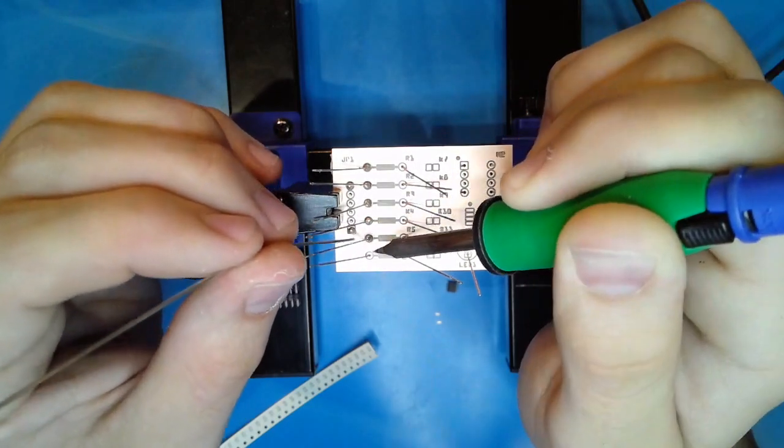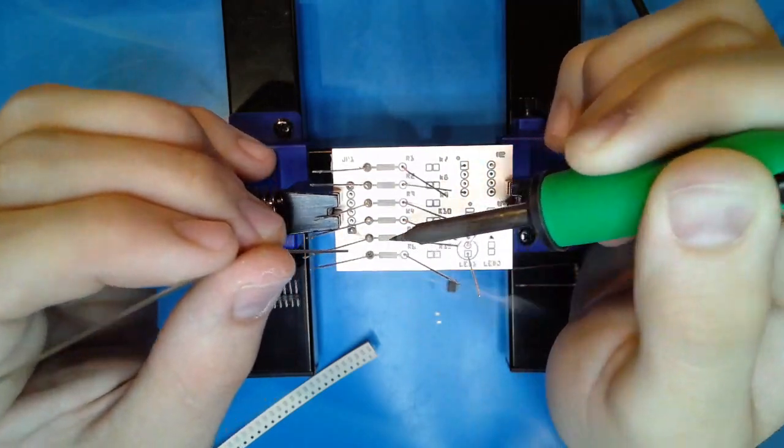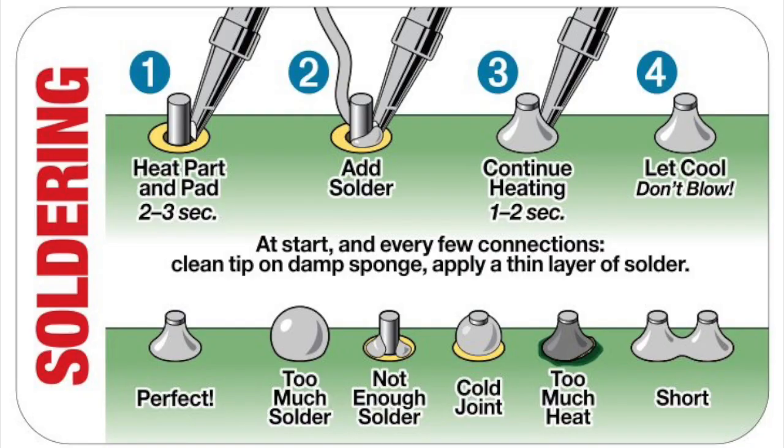A quality joint should look like a Hershey's Kiss. If you remove the iron before the solder, it will get stuck in the joint. If you ever need to be reminded of the steps while soldering, refer to this guide by Adafruit.